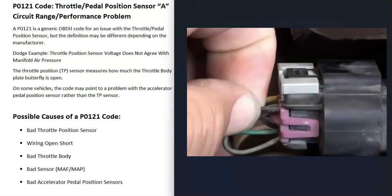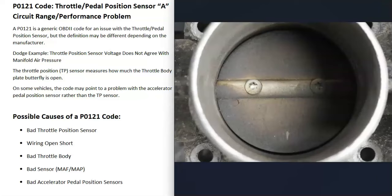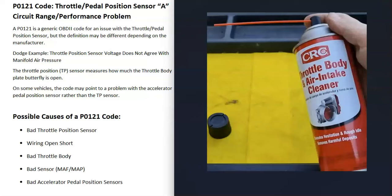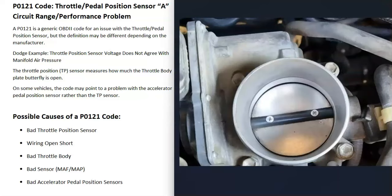The next thing that could cause this is some kind of issue with the throttle body itself — something wrong with the way the plate is opening and closing. It's very common for these throttle bodies to get dirty, especially if the vehicle has a lot of miles on it. If you look at the throttle body and it looks really dirty, all black and grimy, it could be a good idea to get some throttle body intake air cleaner and spray inside to clean it up. You can even use a little toothbrush to clean the whole area and get rid of all that grime — this often helps solve a lot of issues.